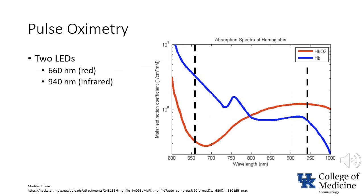Conventional pulse oximetry involves two light-emitting diodes, one of which emits light in the red band and the other of which emits light in the infrared band. Oxyhemoglobin absorbs less red light than reduced hemoglobin — you know this because arterial blood, which has a higher partial pressure of oxygen, is brighter red than venous blood. On the other hand, oxyhemoglobin absorbs more infrared light than reduced hemoglobin.